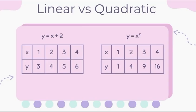Linear versus quadratic. You can tell what a function is based on the rate of change. Linear functions have a constant rate of change, and quadratics don't.